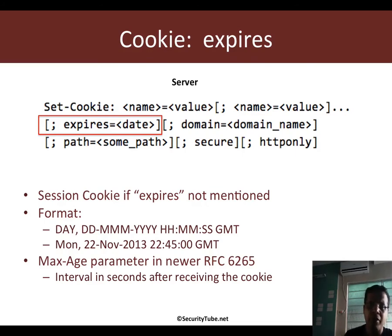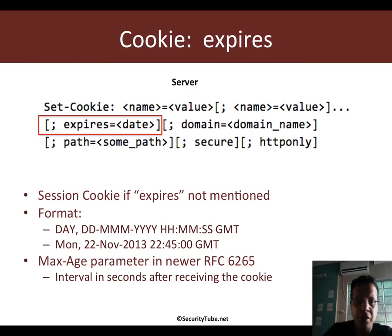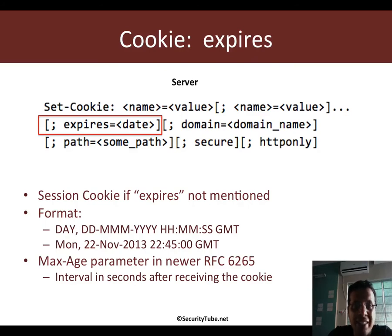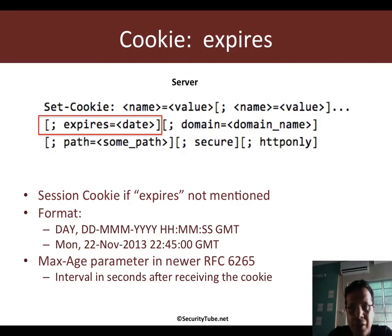One of the most important attributes of a cookie is the expires attribute. Expires is really when the browser should go ahead and delete and expunge the cookie from its cache. If a Set-Cookie does not have expires, what that means is it is a session cookie. This instructs the browser to remove the cookie as soon as the user closes the browser.